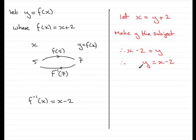Now the y values are the f to the minus 1 of x values. So we just replace the y with f to the minus 1 of x. f to the minus 1 of x equals x minus 2. And you can see that this is obviously the same as this.